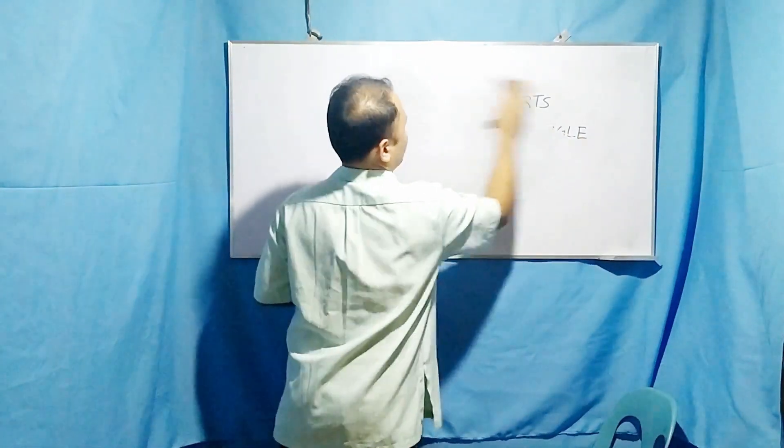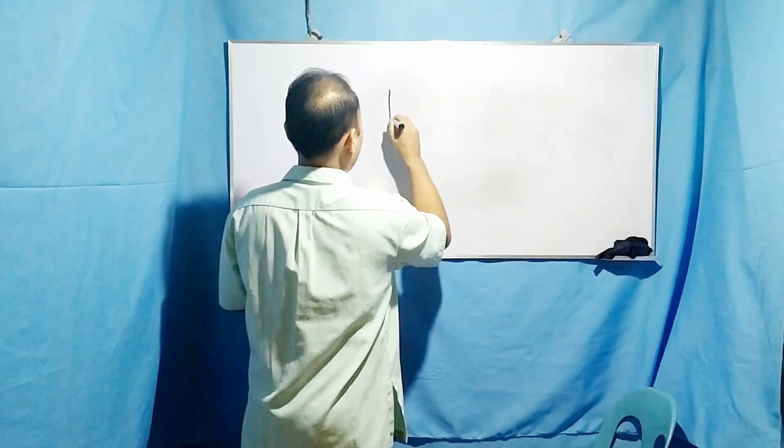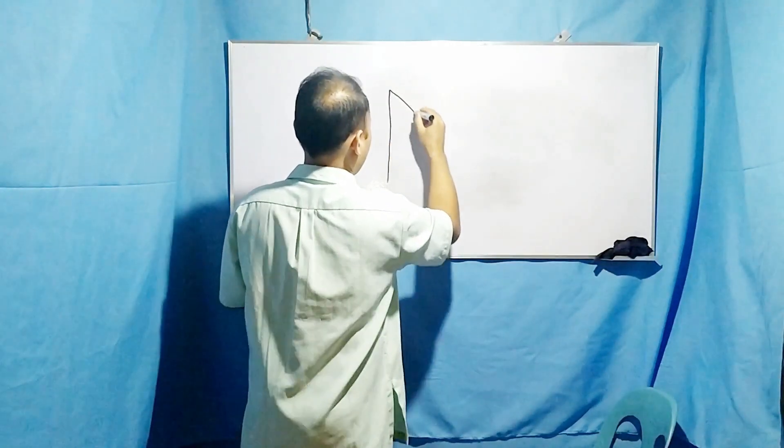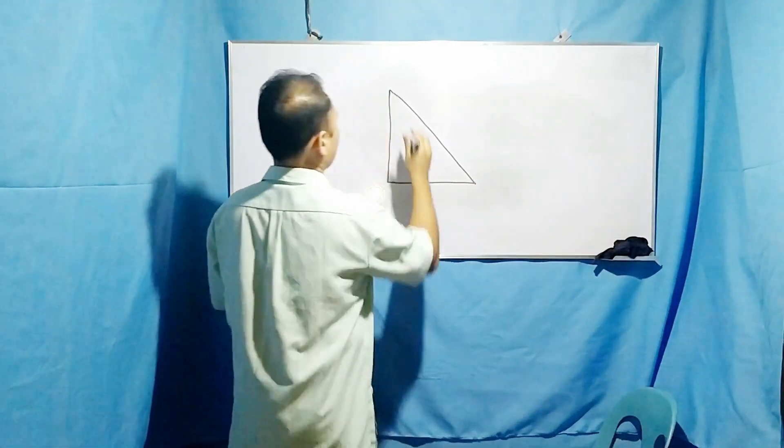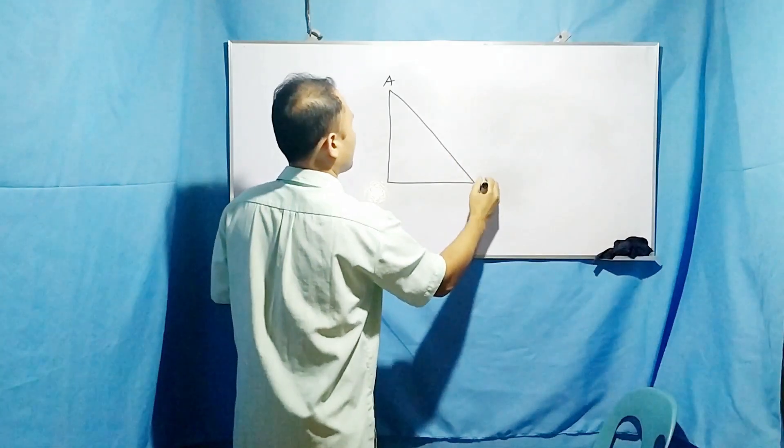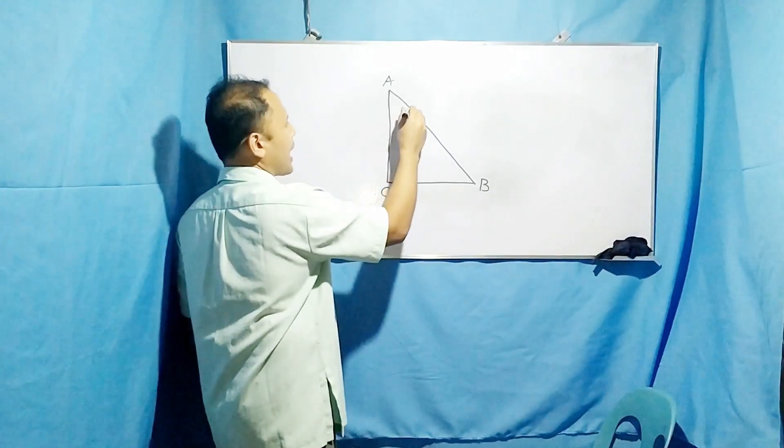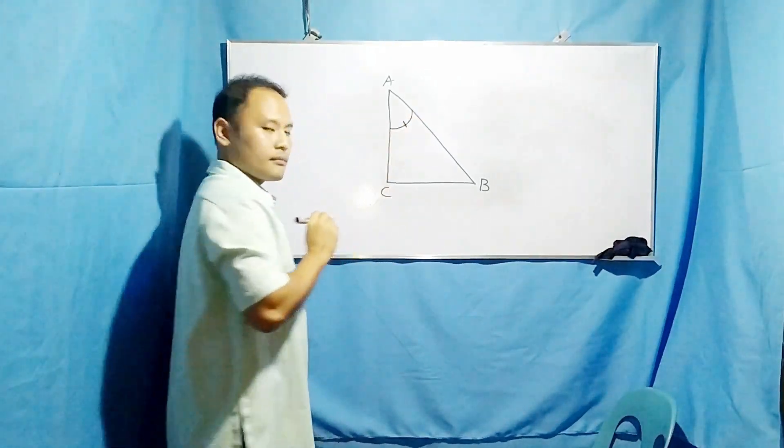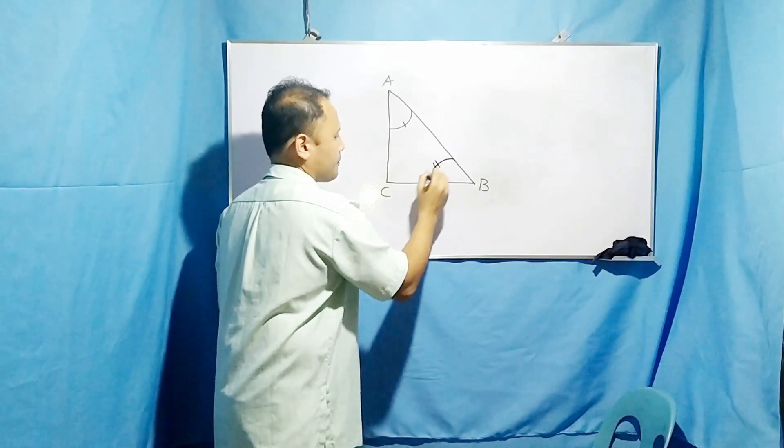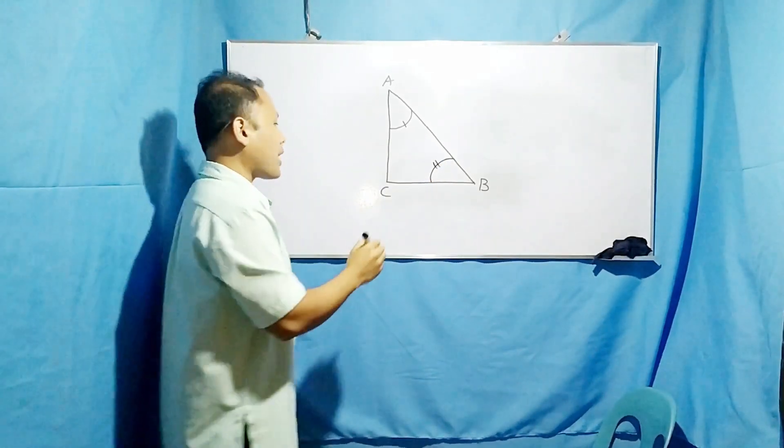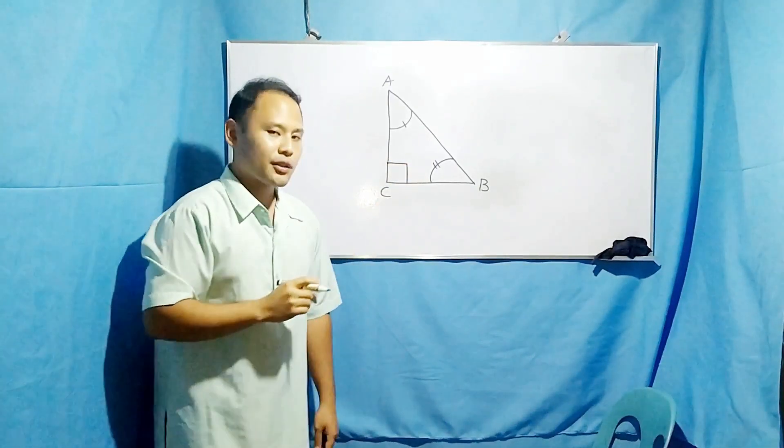Suppose we have this right triangle here. Let me draw it. And suppose it has three vertices: vertex A, vertex B, and vertex C. Vertex A, that is point A, is part of acute angle A. Vertex B is a point and it is part of acute angle B. Vertex C is part of a right angle represented by a square. Remember that a right angle measures 90 degrees.